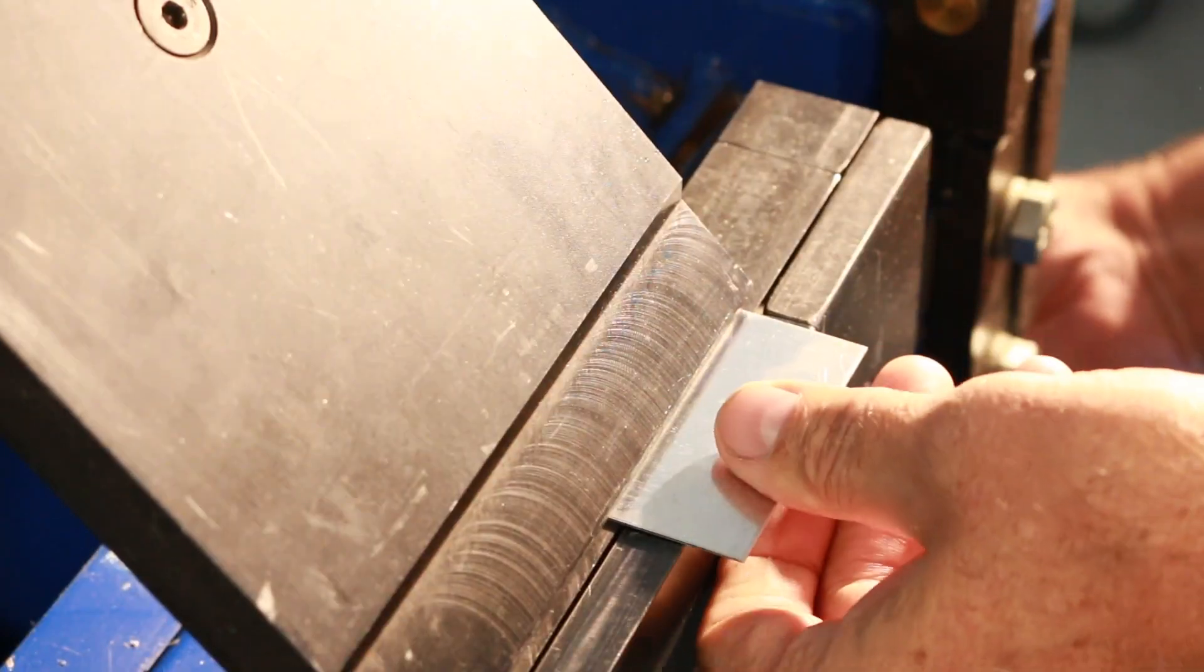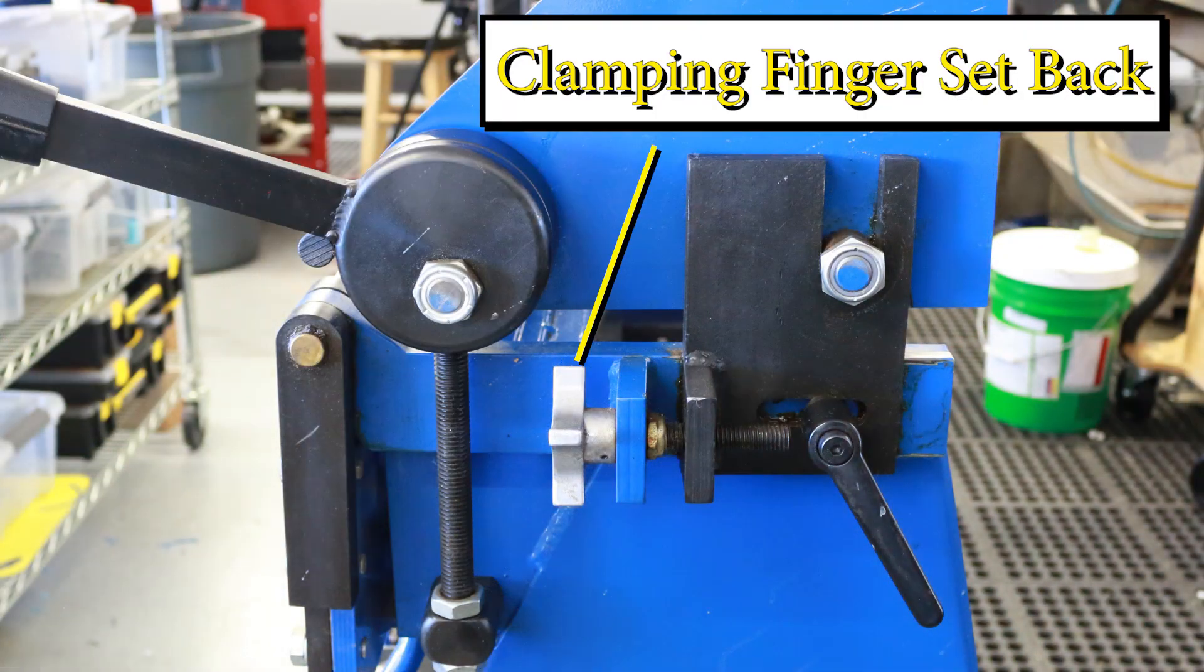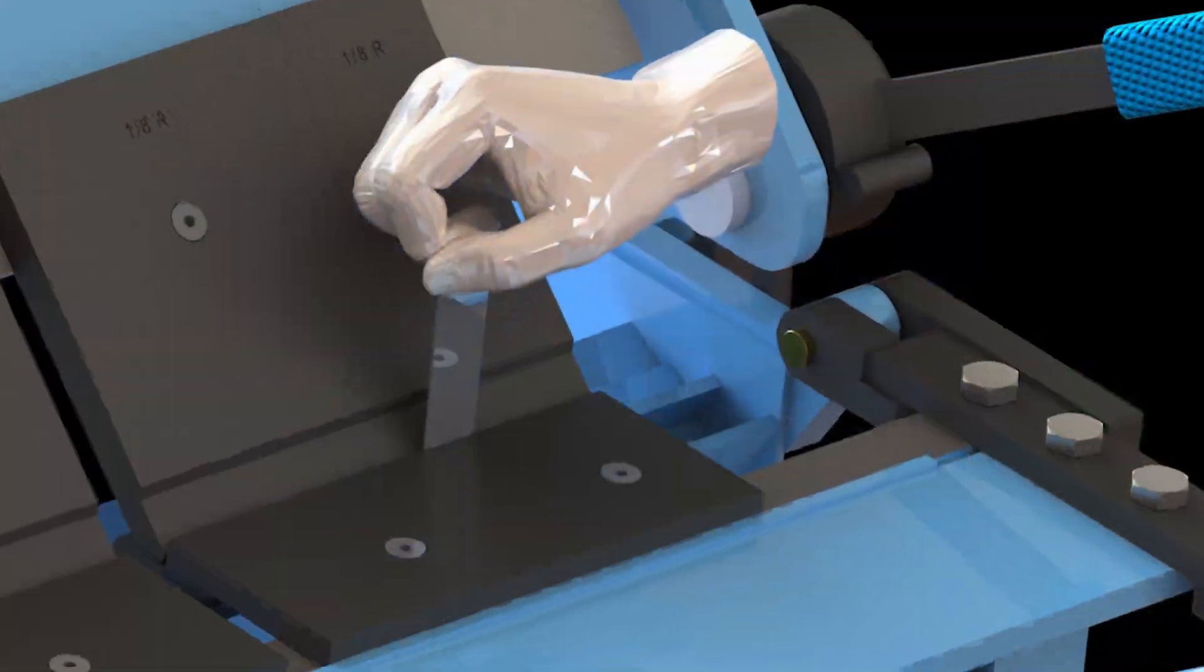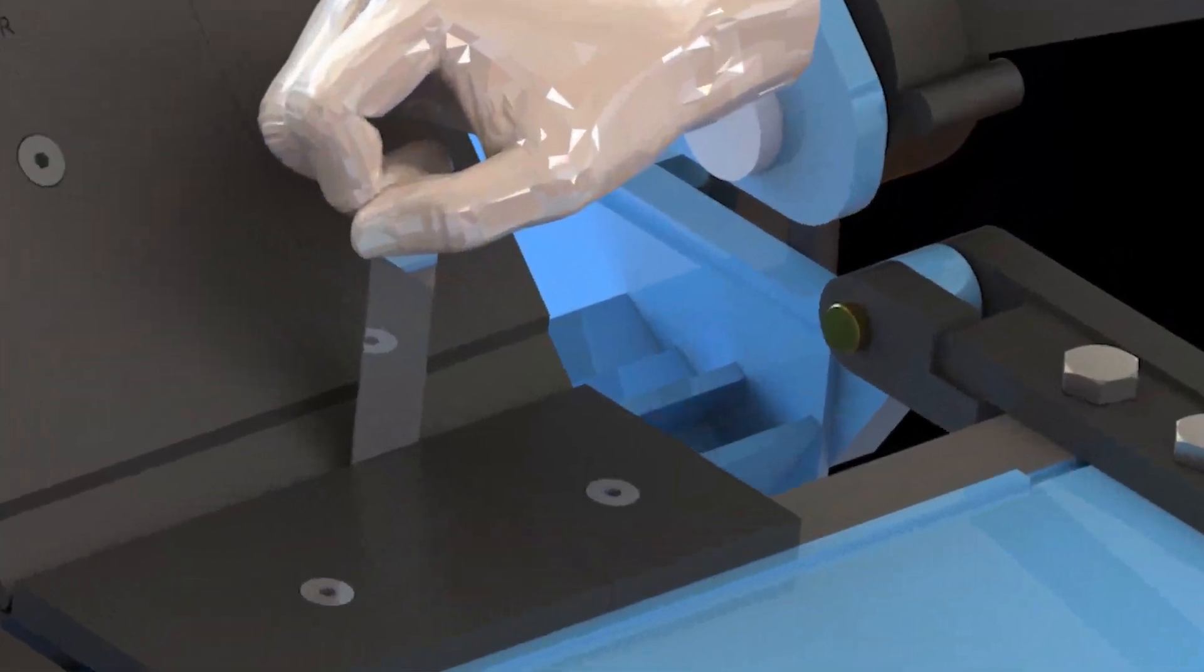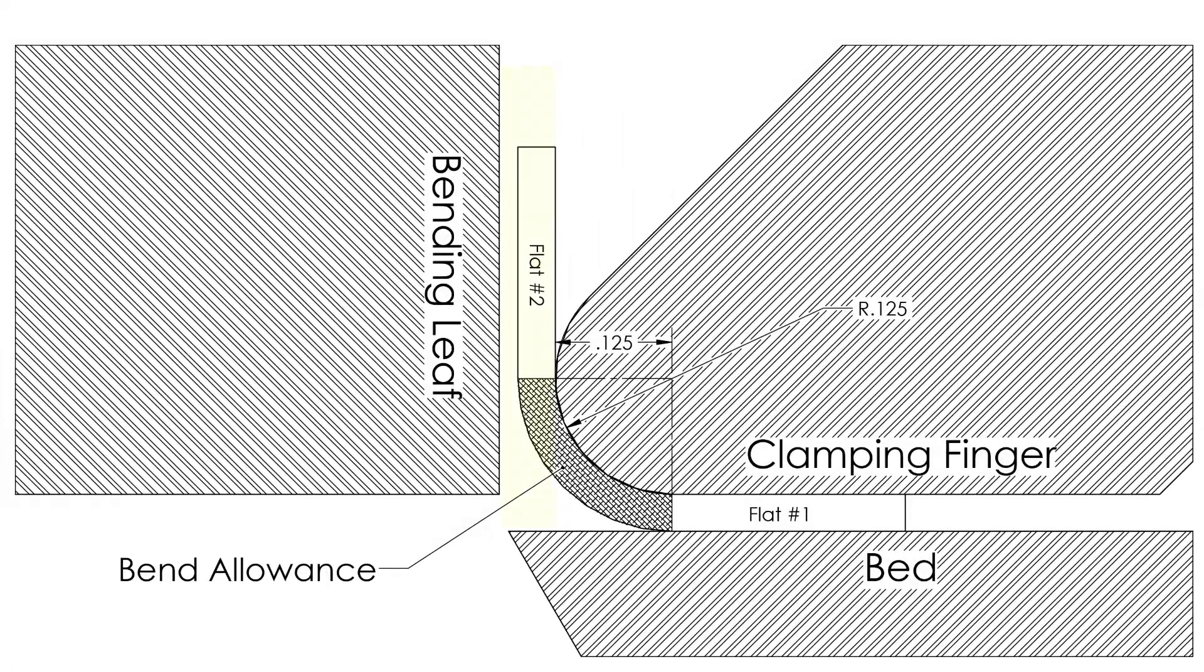Next, we need to adjust the clamping finger setback. The purpose for this is to provide enough space between the bending leaf finger and the nose of the clamping finger at the point of maximum bend. If not enough space is provided at the maximum point of bending, damage to the aluminum or even the radius fingers is possible.